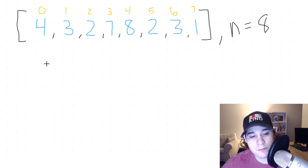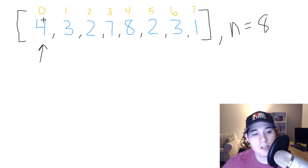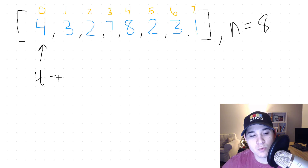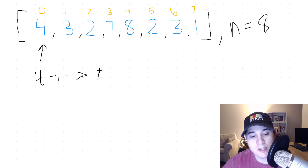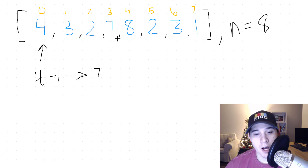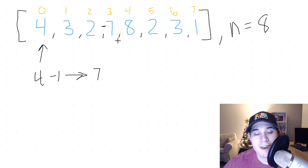We're going to start at index zero, and we see that we have a number four. So let's go to four minus one's index — because the index is zero-based and the numbers are from one to N, that's why we do minus one. So we go to index three, and we check that value, which is seven. We check if this value is a negative number — if it is, that means we found a duplicate. If it's not, we flip the sign. So now this position's value will be negative seven.